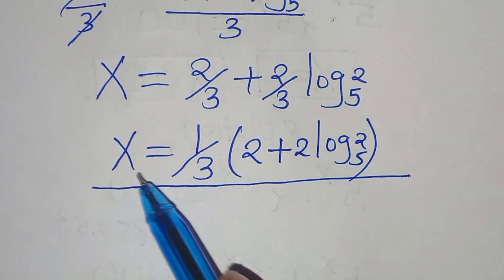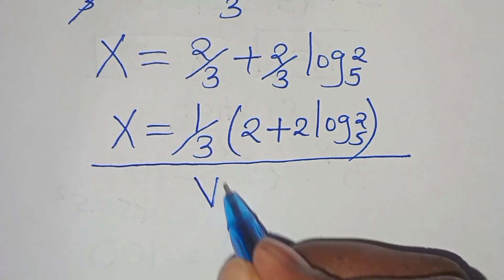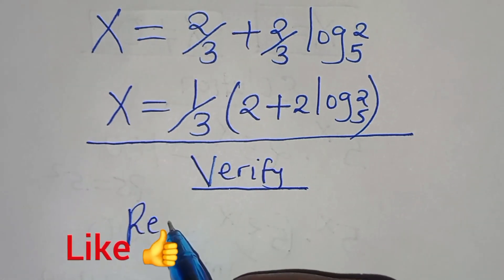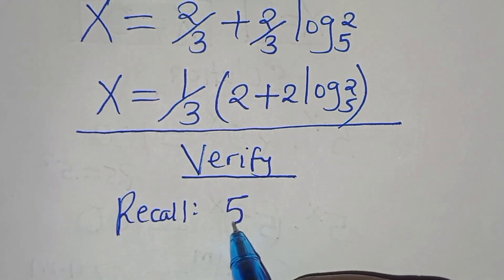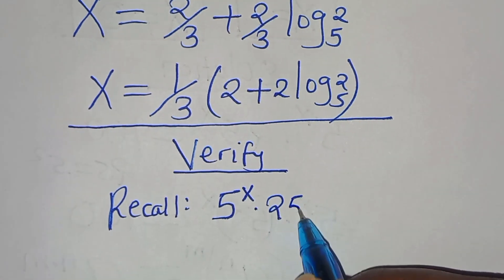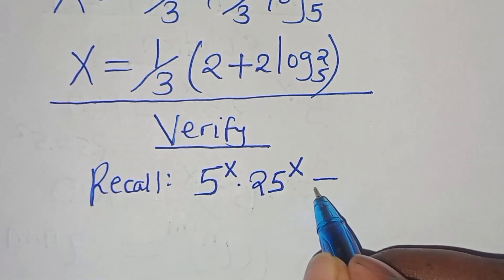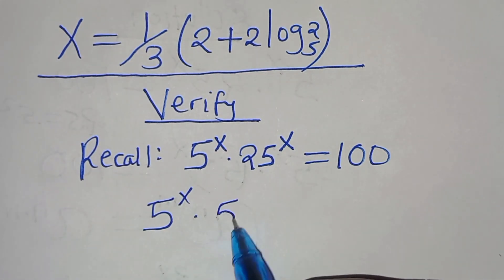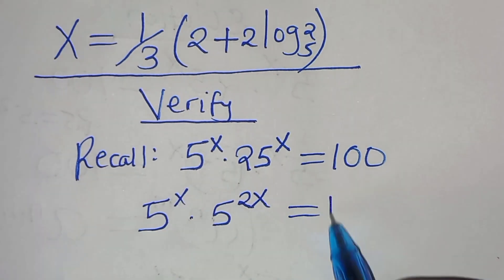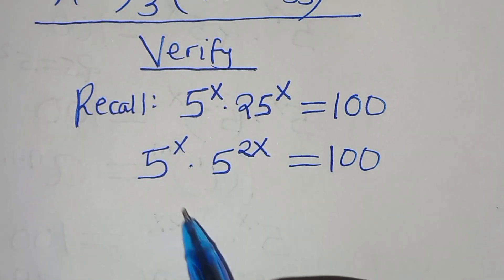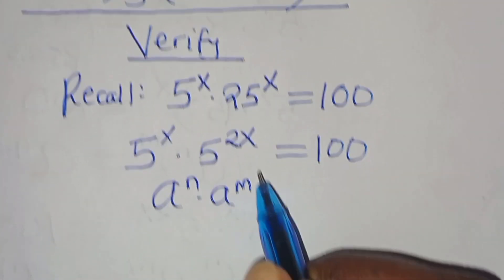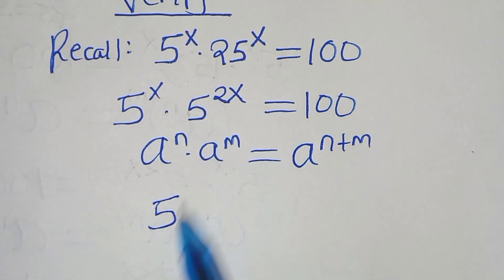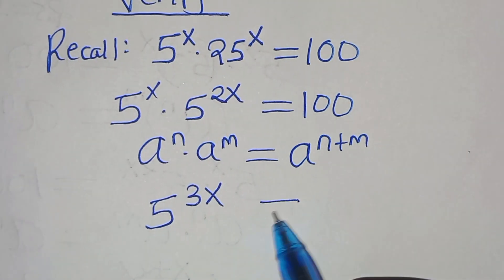The next step is to verify that this value of x satisfies the equation. Recall that 5 to the power of x times 25 to the power of x should give us 100. This is 5 to the power of x times 5 to the power of 2, that is 5 to the power of 2x, equals 100. Using the product of powers rule, 5 to the power of x plus 2x, which is 3x, should give us 100.